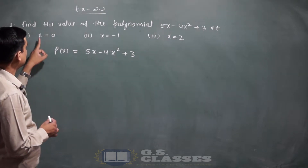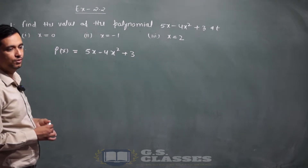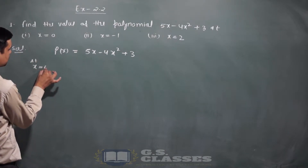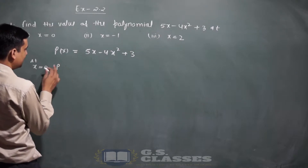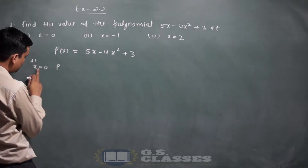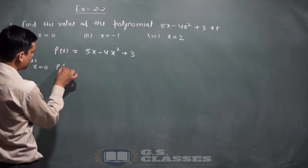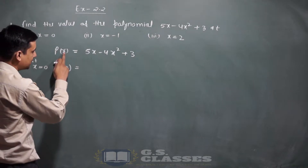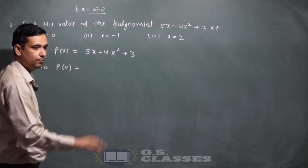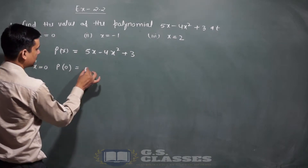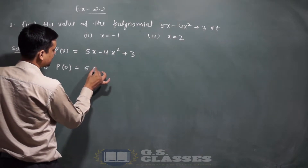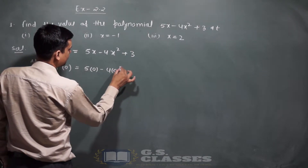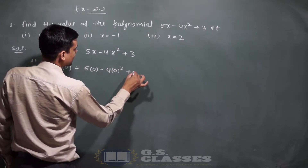इसकी value निकालनी है जब x की value 0 हो। तो यहाँ x की जगह 0 put किया जाएगा। 5x की जगह 0, minus 4 into 0 का square, और plus 3।